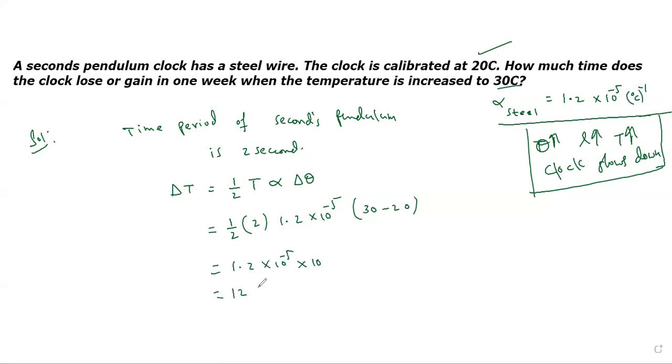Gets cancelled, 12 times 10 power minus 5. This is the change in time period.